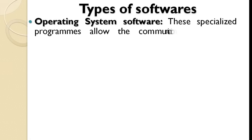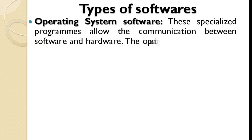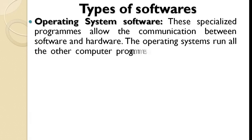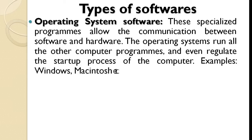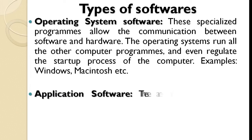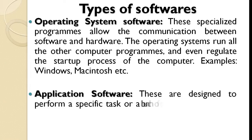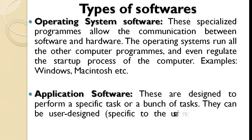1. Operating System Software — these specialized programs allow the communication between software and hardware. The operating system runs all the other computer programs and even regulates the startup process of the computer. Examples: Windows, Macintosh. 2. Application Software — these are designed to perform a specific task or a bunch of tasks. They can be user-designed, specific to the user's needs, or ready-made application software.